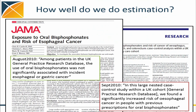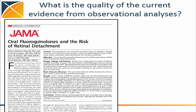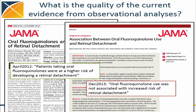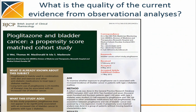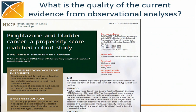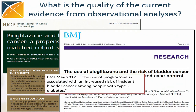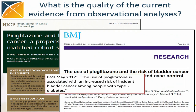You might think I spent months finding this one example — au contraire. If you took out your laptops and started on Google Scholar, you can find a half dozen examples like this in 10 minutes. The literature is replete with examples. Here's another one: oral fluoroquinolones and the risk of retinal detachment. One paper: patients taking oral fluoroquinolones were at higher risk. Another: oral fluoroquinolone use was not associated with increased risk of retinal detachment. Two papers in JAMA. Pyoglitazone and bladder cancer — same pattern: one says no significant association, the other says there is an increased risk.